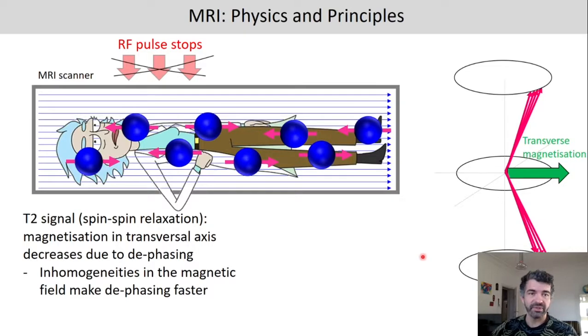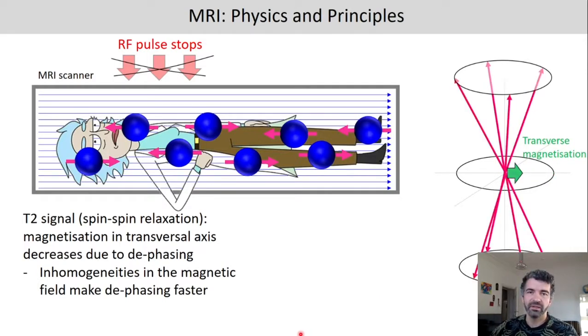The second thing that happens after the RF pulse has stopped is, and this is what we measure with the T2 signal, it's the spin-spin relaxation, meaning that now the protons do not spin in phase anymore. So you can see they're de-phasing, and that means that the transverse magnetization is slowly decreasing. Now, when they're all completely de-phased, then we have no net magnetization left. So the transverse magnetization is zero now.